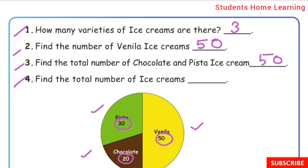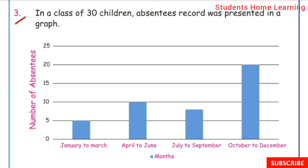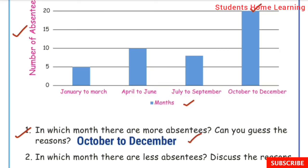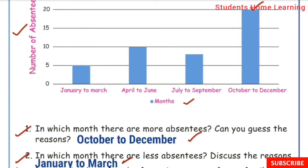Find the total number of ice creams. Which month has the least number of absentees? Answer: January to March. During January to March, 5 students are absent. This is the spring season and the climate is pleasant.